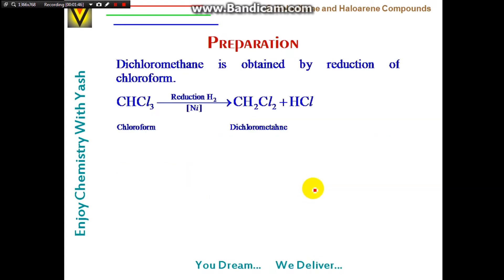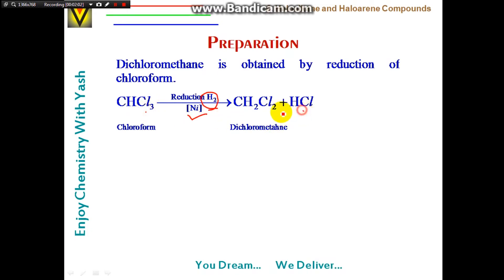Another method: dichloromethane is obtained by reduction of chloroform directly by hydrogen gas in the presence of a nickel catalyst. Chloroform loses one chlorine as HCl, and one hydrogen is added, converting it into dichloromethane.